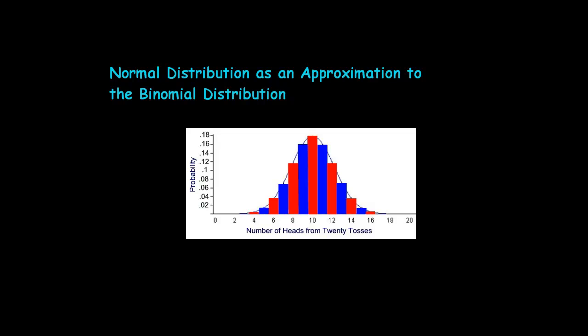Therefore, if the requirements are satisfied, we can use a normal distribution to approximate a binomial distribution.